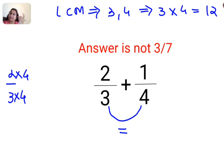Whatever operation happens in the denominator needs to be done in the numerator as well. So next is 1 upon 4. I need to convert this 4 into 12, so I need to multiply this 4 with 3.